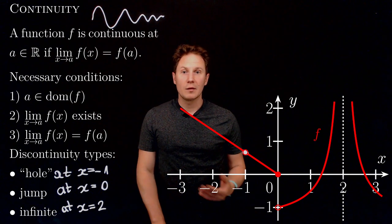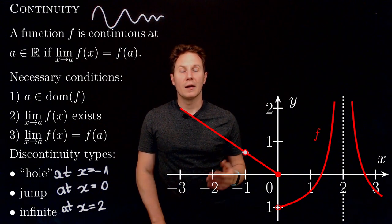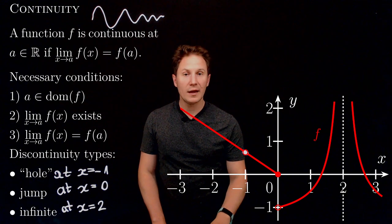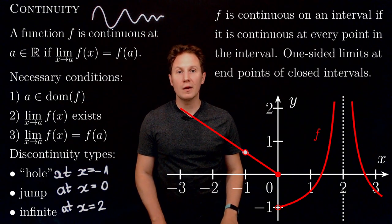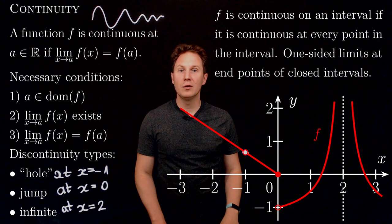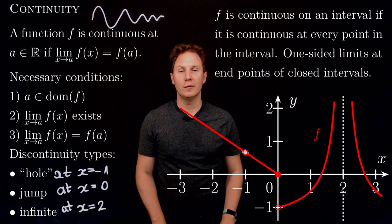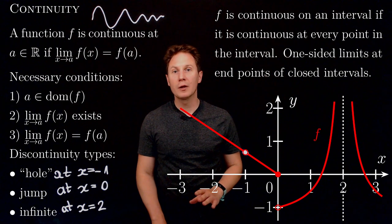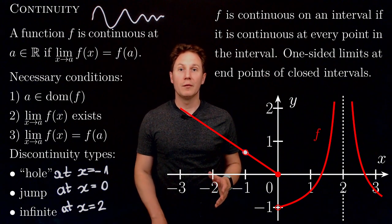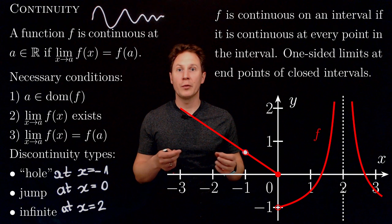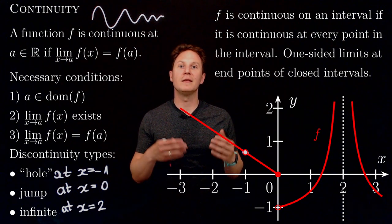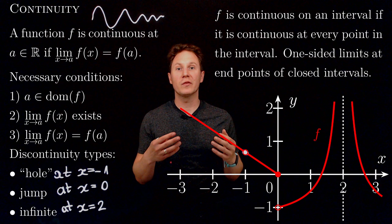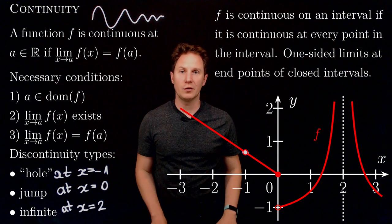Let me define what we mean by continuity on an entire interval. We say that the function is continuous on an interval if it is continuous at every point in the interval. If the interval happens to be half-closed or closed, with some endpoints included, then at the endpoints we need to take the appropriate one-sided limits in the definition of continuity.